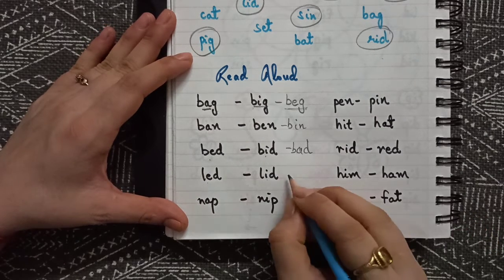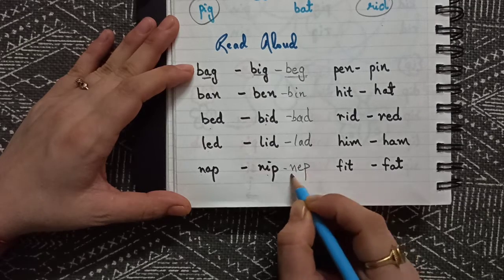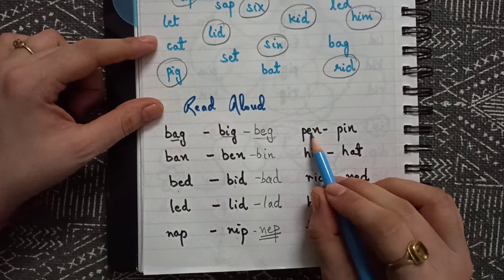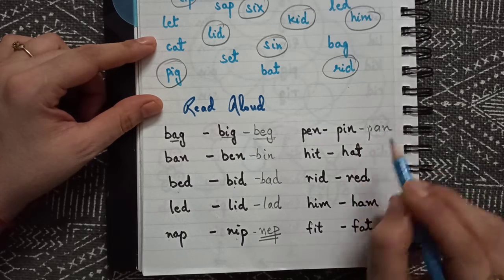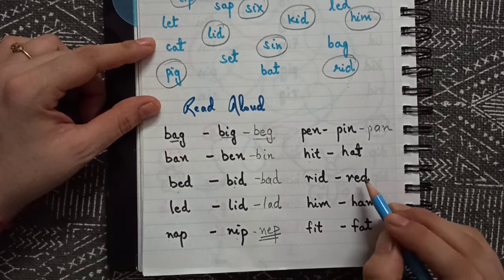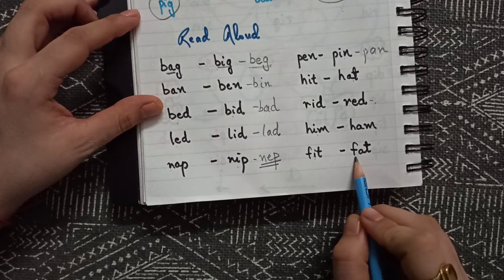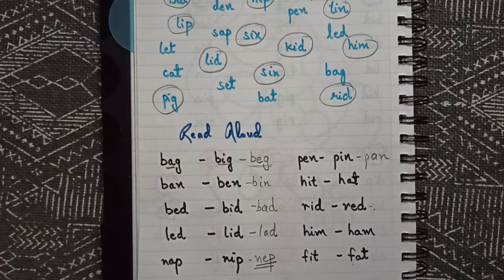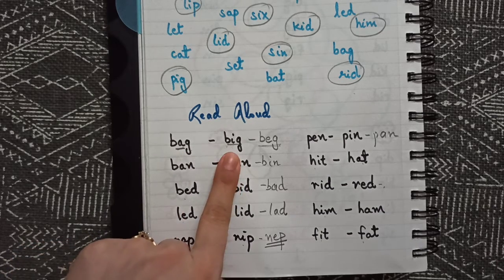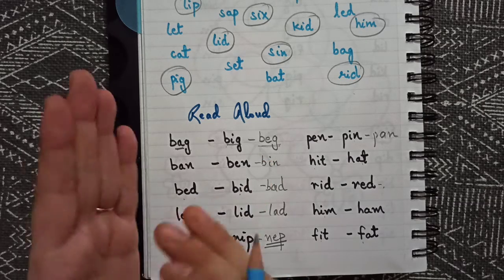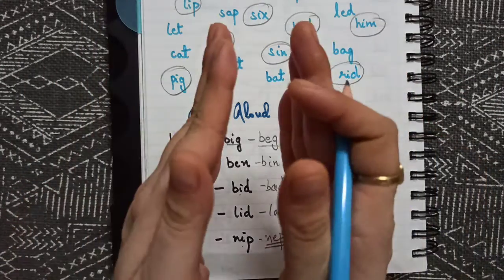Led, lid, or lad. Nap, nip — let them play with the words even if it's not a real word. Pen, pin, or pan. Hit, hat; rid, red; him, ham; fit, fat. That's how they will learn. Bag — stretch it out; big — say it quickly; beg — stretch a little compared to I. So: bag, beg, big. Like this.